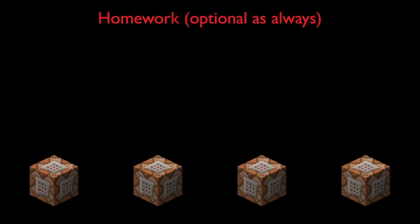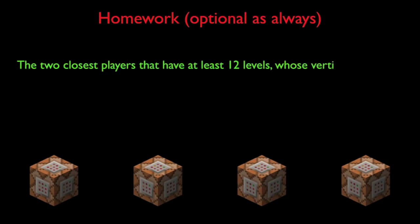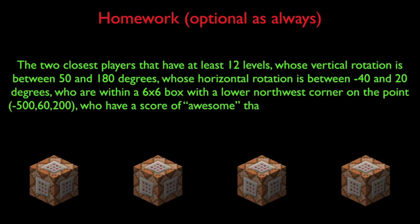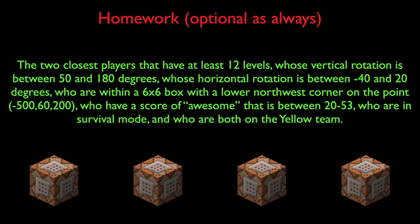And as for homework today: write a target selector statement that will target the two closest players that have at least 12 levels, whose vertical rotation is between 50 and 180 degrees, whose horizontal rotation is between -40 and 20 degrees, who are within a 6x6 box with its lower northwest corner on the point 0, -500, 60, 200, who have a score of AWESOME between 20 and 53, who are in survival mode, and who are both on the yellow team. Make sure to study the arguments we went over today.